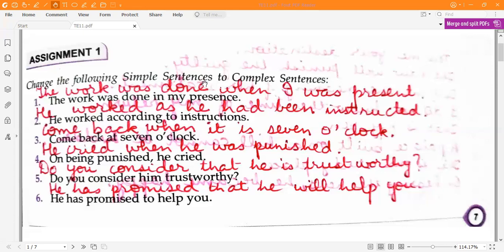Change the following simple sentences to complex sentences. The work was done in my presence. The work was done when I was present. He worked according to instructions. He worked as he had been instructed.